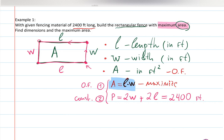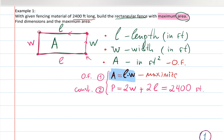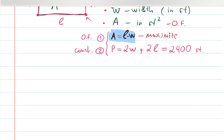Area is a function of two variables, L and W. In Calculus 3 — multivariable calculus — we'll learn to handle functions of many variables. But in this class we need to eliminate one variable, either L or W, so that area depends on only one variable. Then we know how to differentiate and proceed.